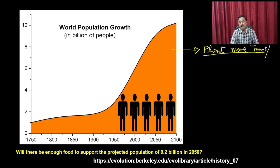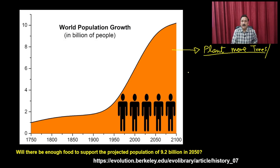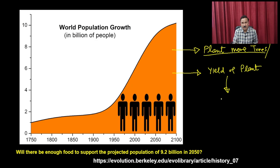We are expanding roads, expanding urban civilization, making newer houses, and all of that is coming at the cost of reducing agricultural land. So the approach of simply increasing agricultural land will not be sufficient. The other option is to increase the yield of a particular plant — if you increase the yield, it gives you more production.